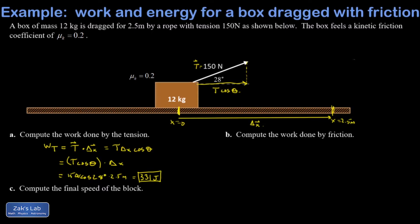Then I want the work done by the friction force. I don't have a picture of the friction force yet, so I'll get that. Fk is going to be μk times the normal force, but I don't have the normal force either. I'm not going to say N equals mg because I have another force affecting the vertical direction, so I need to do a real vertical analysis. The force of gravity is mg — 12 times 9.8 equals 117.6 newtons. The vertical component of the tension is T sine θ, or 150 sine 28, which is approximately 70.4 newtons.